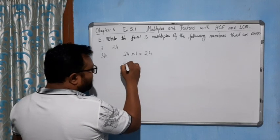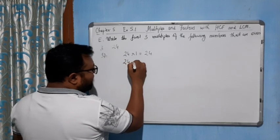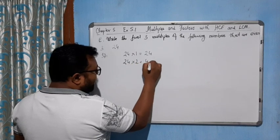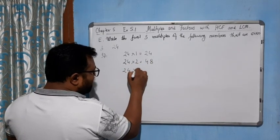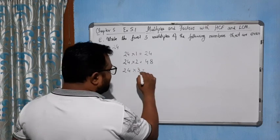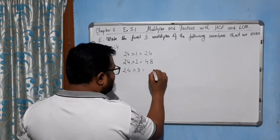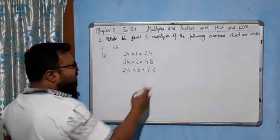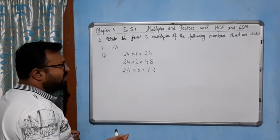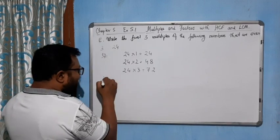24 times 2 is 48. And 24 times 3, how much you will get? 72. See, all these three are even multiples.